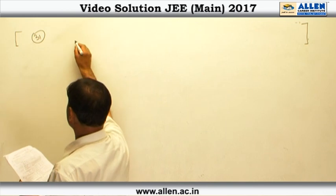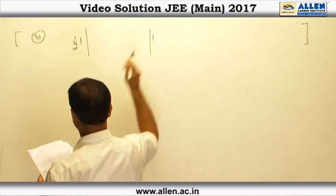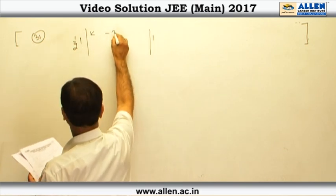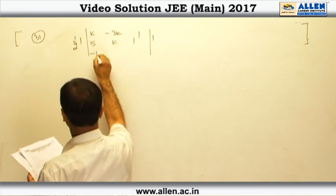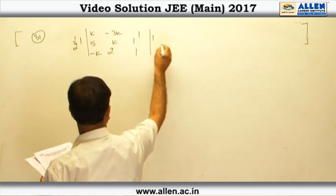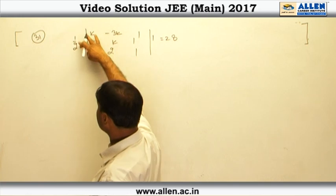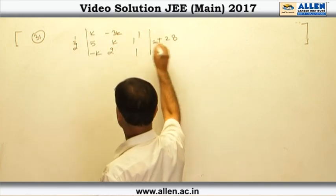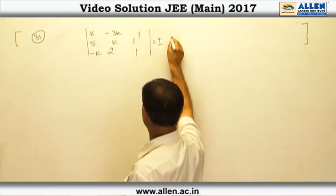First we apply the area of the triangle formula: using area of the triangle as half times the absolute value of the determinant, which will be |K, -3, 1; 5, K, 1; -K, 2, 1| equal to 28. When we remove the modulus sign, there will be a plus-minus sign on the right-hand side, and when we multiply by 2, it becomes 56.